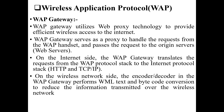The WAP gateway utilizes web proxy technology to provide efficient wireless access to the internet. The mobile system's request uses one protocol, while the server works on a different protocol, so the gateway translates between them. It serves as a proxy to handle requests from wireless handsets and passes them to the origin server. The gateway translates WAP protocol stack requests into HTTP or TCP and vice versa.